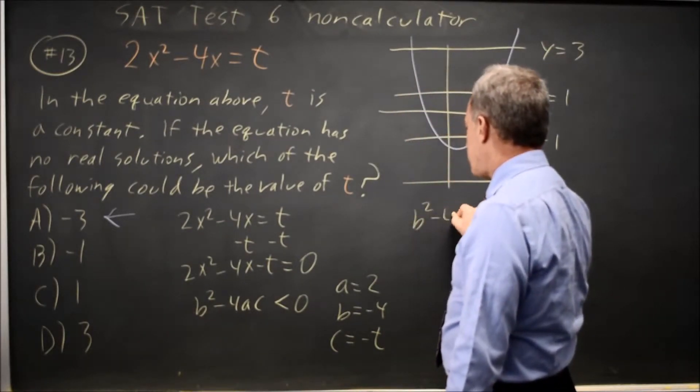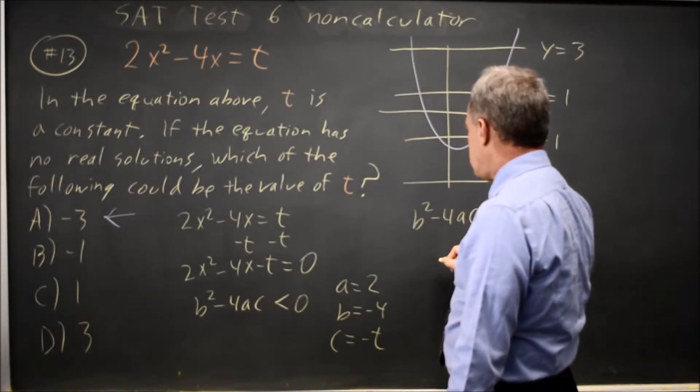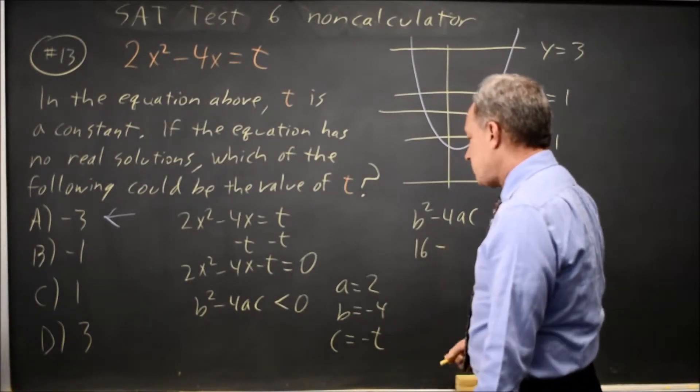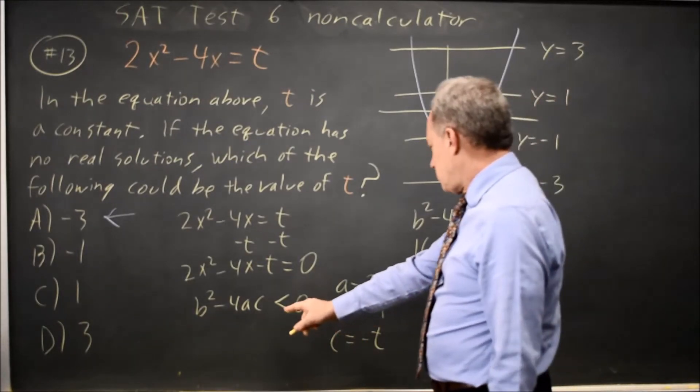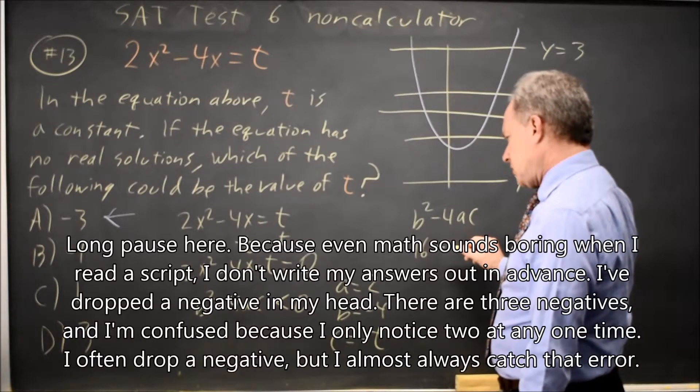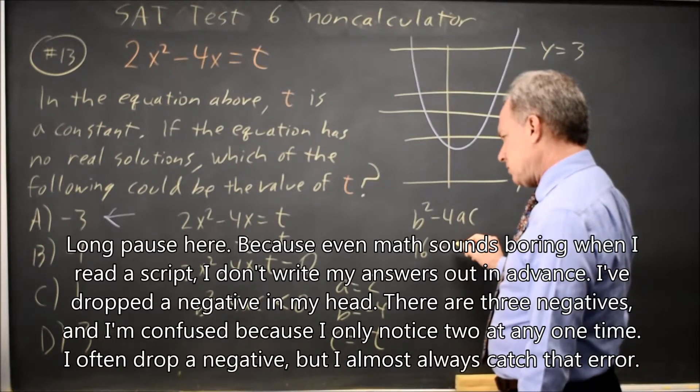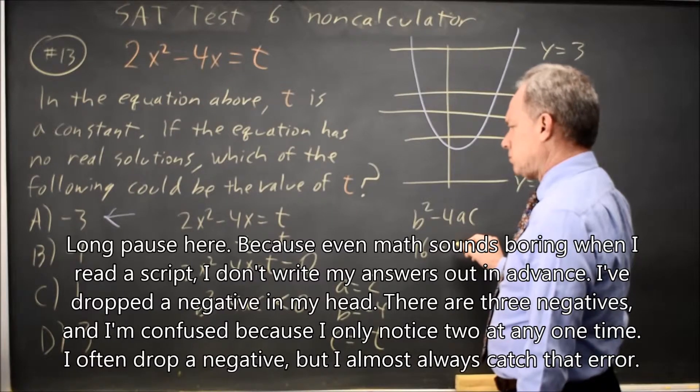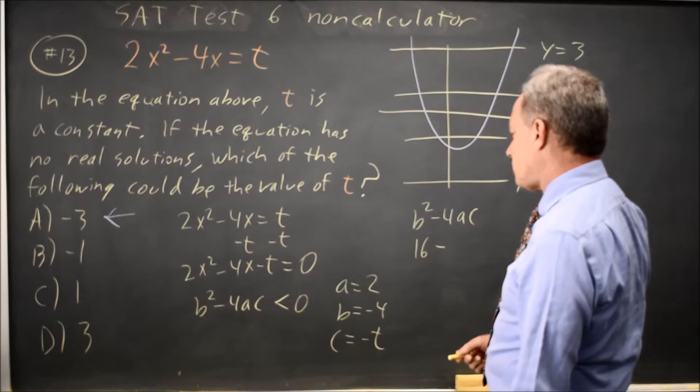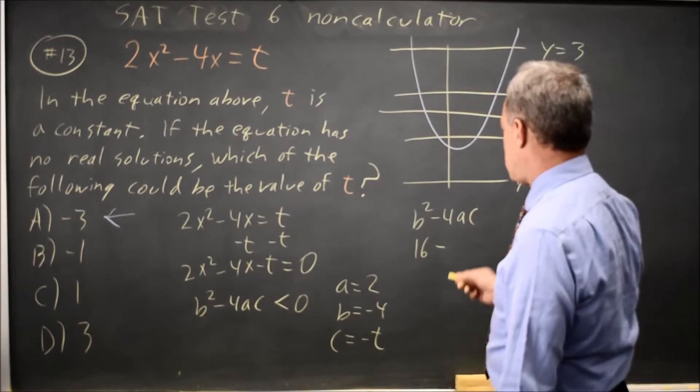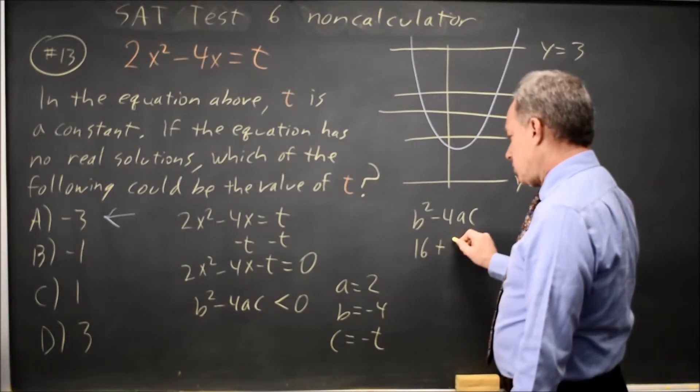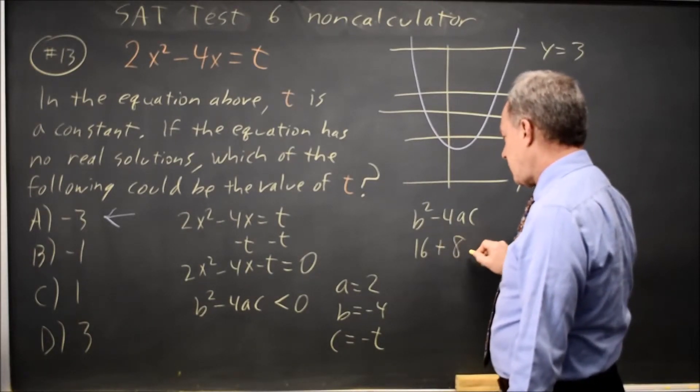So, if b squared minus 4ac is equal to, b squared is negative 4 squared is 16, minus 4ac is minus 4 times negative t is... something wrong with that. Oh yes, minus 4 times negative t is plus 4t times 2 is plus 8t.